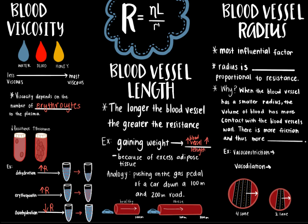An analogy can be seen with a car and the distance it needs to travel. If you push on the gas pedal — like the heart's pumping force — the car will be able to move a complete distance of 100 meters, like blood flow through a vessel in a healthy person. However, with the same pumping force, the car may not make it to 200 meters, which is the case of blood flow through a vessel in an obese person.